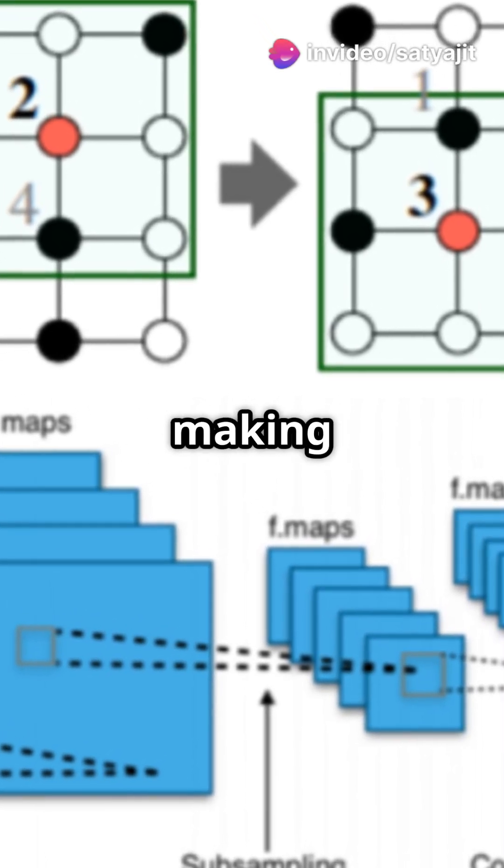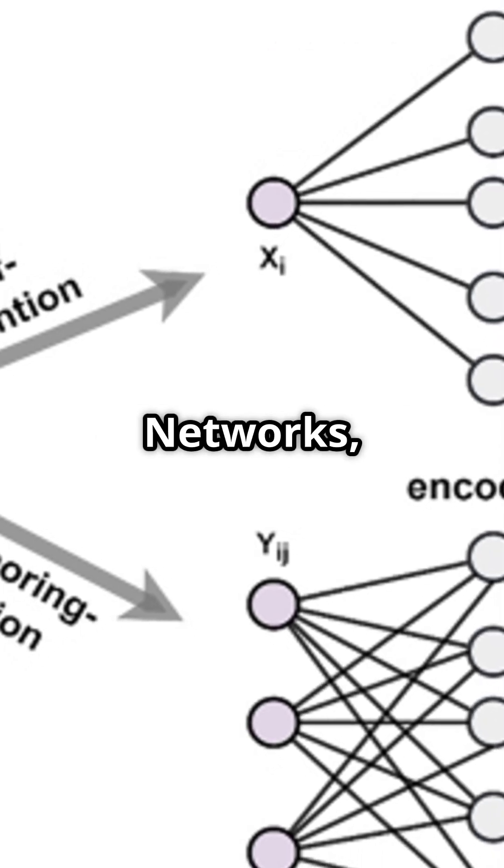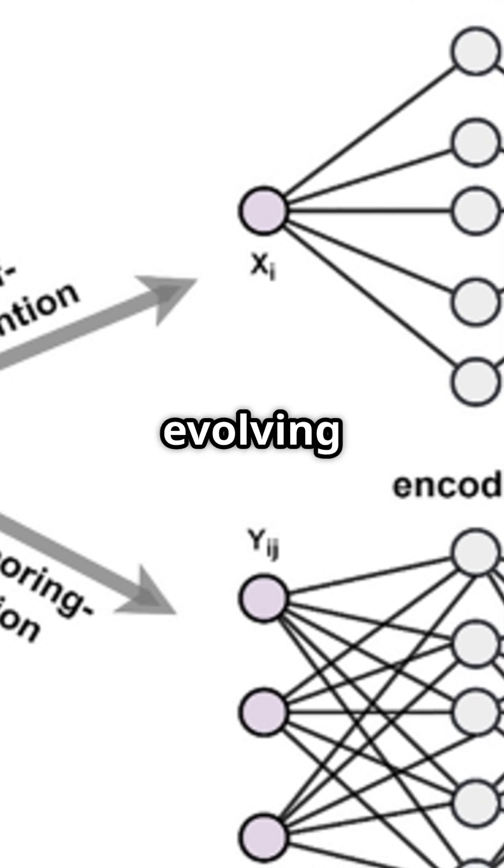It's like getting advice from all your friends before making a decision. There are cool versions of GNNs too: graph convolutional networks, graph attention networks, and even temporal graph networks for evolving relationships over time.